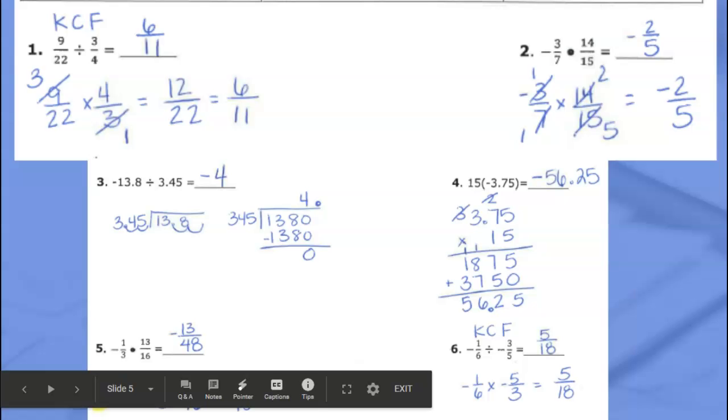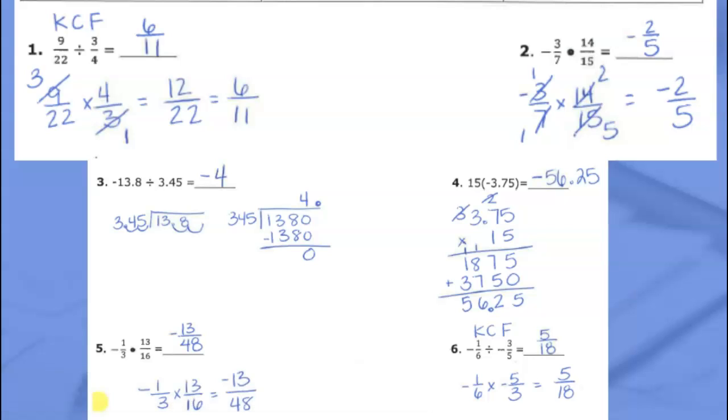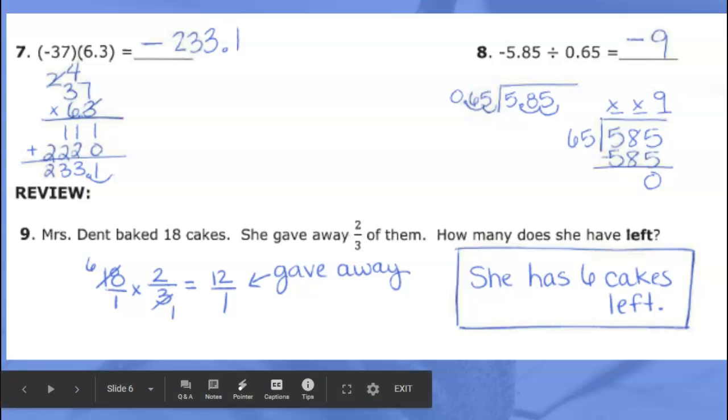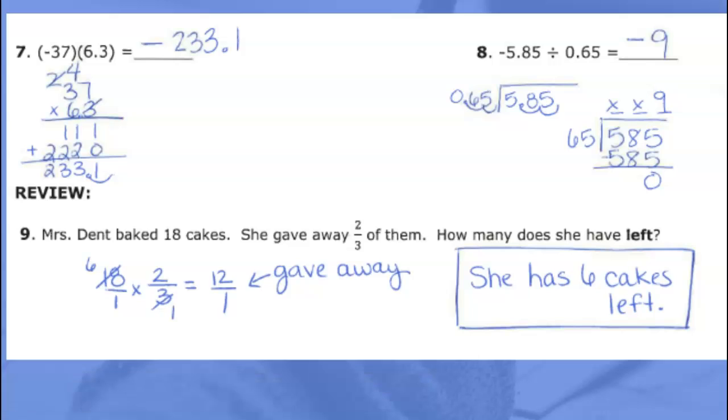Let's do a quick homework check. Number one: six-elevenths. Number two: negative two-fifths. Number three: negative four. Number four: negative fifty-six and twenty-five hundredths. This was the one that was incorrect on the scrambled answers at the bottom that we fixed yesterday. Number five: negative thirteen forty-eighths. Number six: five-eighteenths. Pause the video at any point if you need to. Number seven: negative two hundred thirty-three and one-tenth. Number eight is negative nine. Number nine: she had six cakes left. You have to have cakes, otherwise it's minus one because you didn't put your units.